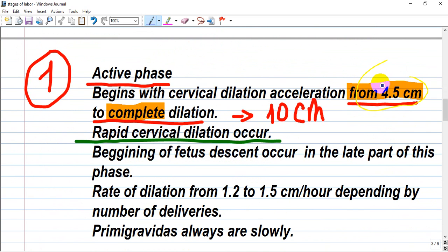cervical dilation acceleration from 4.5 centimeters to complete dilation. Rapid cervical dilation occurs—this thin layer is rapidly dilated. In this phase, fetus descent occurs in the late part, with the fetus beginning to descend into the pelvis and engage.